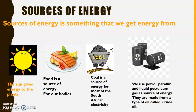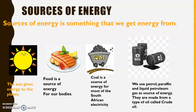Coal is a source of energy for most of South Africa's electricity. The coal is burnt and the steam is used to trigger a turbine, and that gets to our homes. We will learn more about how electricity is generated in Grade 5. We also use petrol, paraffin, and liquid petroleum gas as sources of energy. They are made from a special oil called crude oil, which you've probably heard about on the daily news. All these are the most common sources of energy for the five types of energy we discussed.